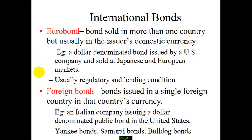One of the key differences between euro bonds and foreign bonds is restrictions and flexibility. Euro bonds are quite flexible and regulation-friendly, while foreign bonds are quite restrictive — the issuing company has to meet all the regulatory requirements.